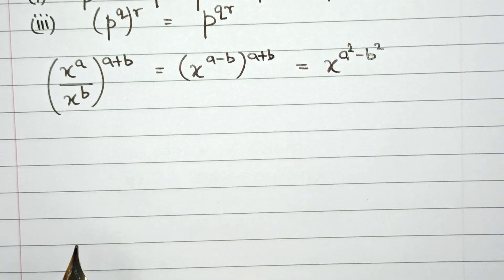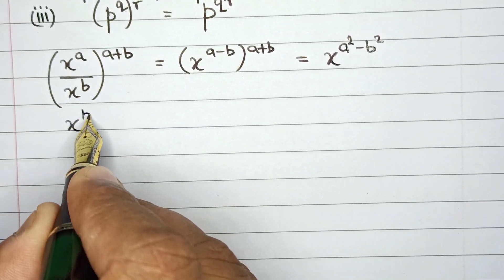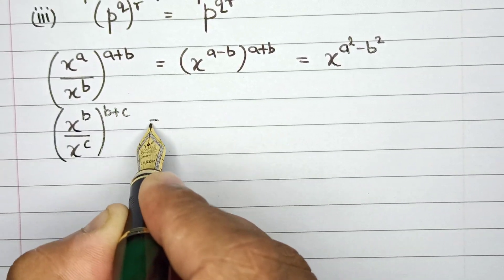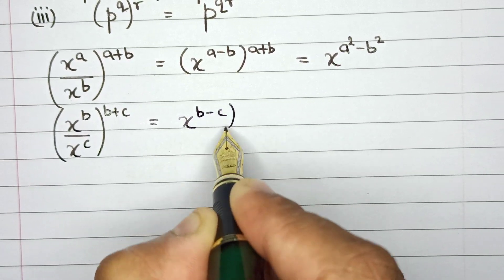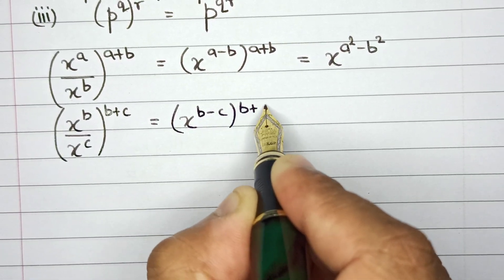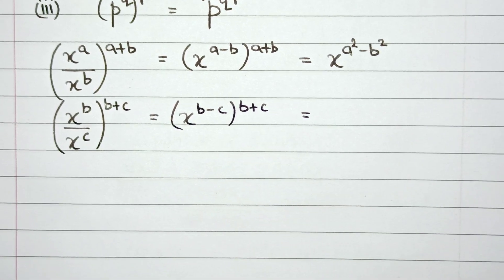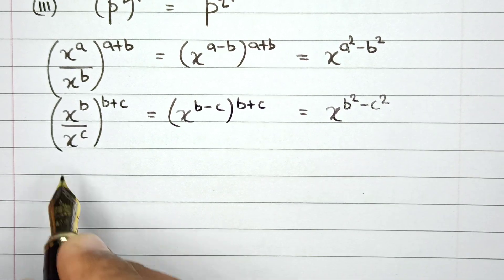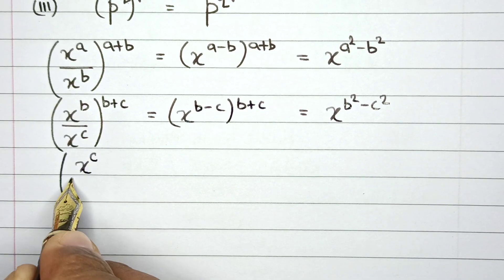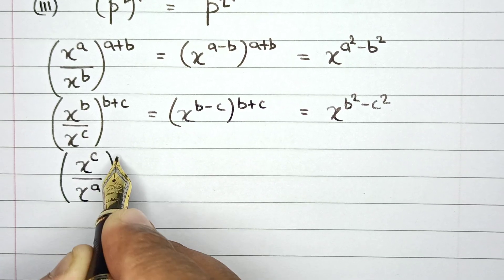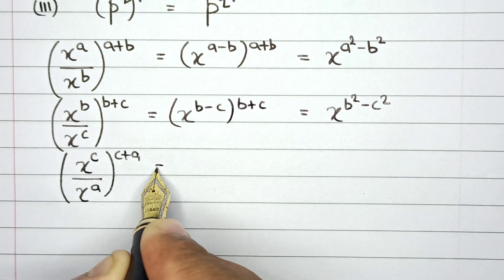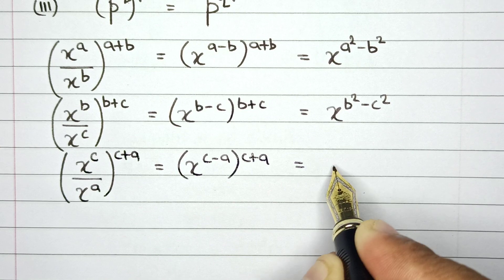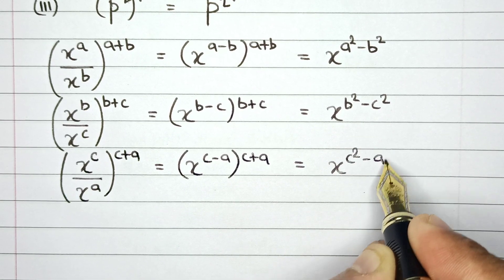Similarly, for the second part: X raised to the power B divided by X raised to the power C, whole raised to the power of B plus C. This gives X raised to the power B minus C multiplied by B plus C, which by the same identity equals B squared minus C squared. For the third part: X raised to the power C divided by X raised to the power A, whole raised to C plus A. This gives C minus A multiplied by C plus A, which equals C squared minus A squared.